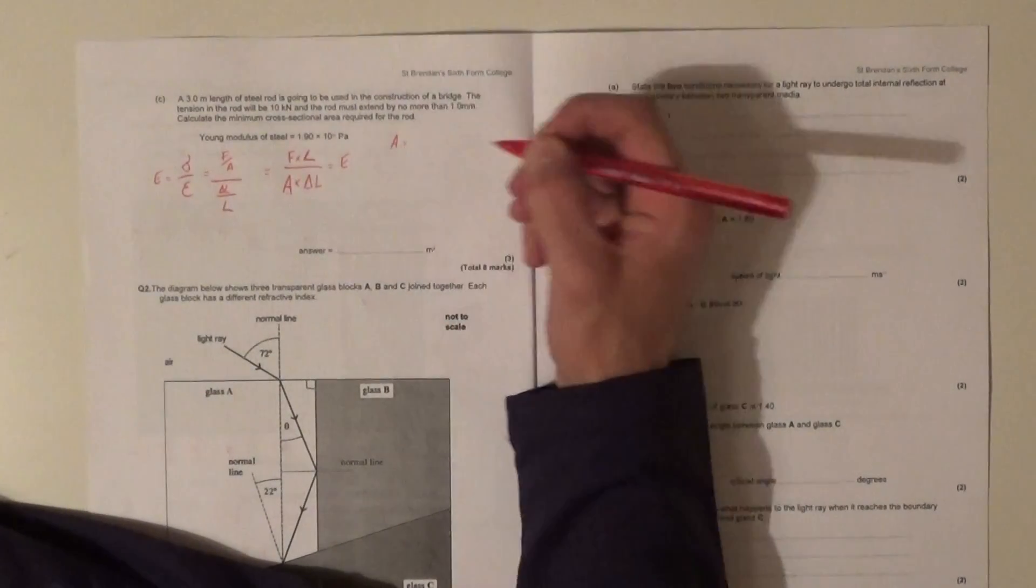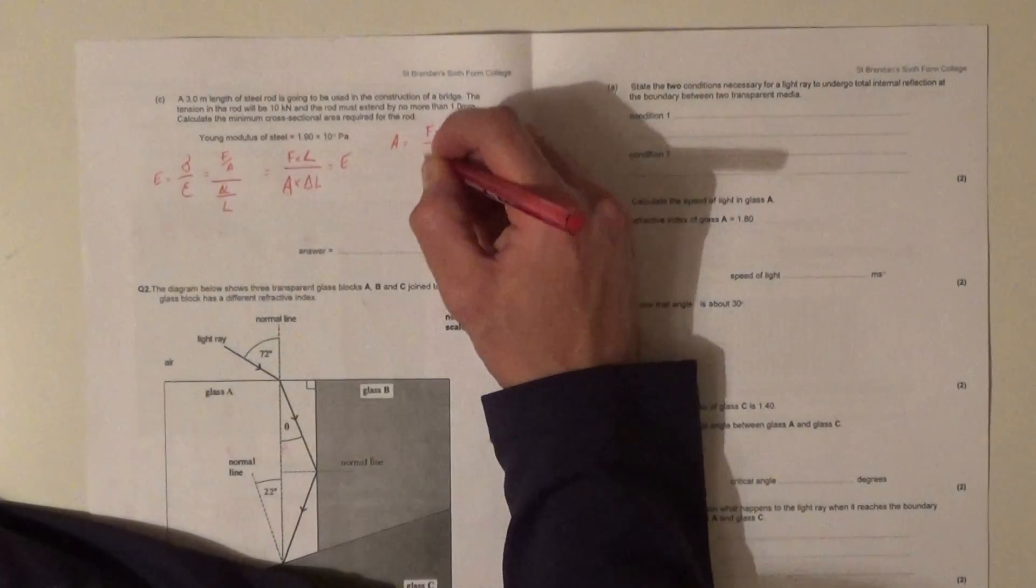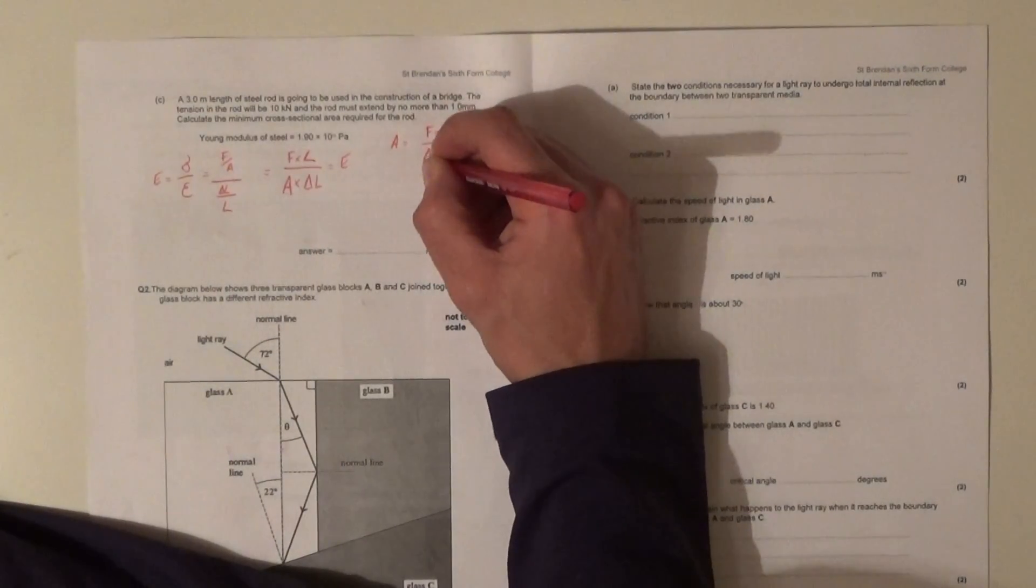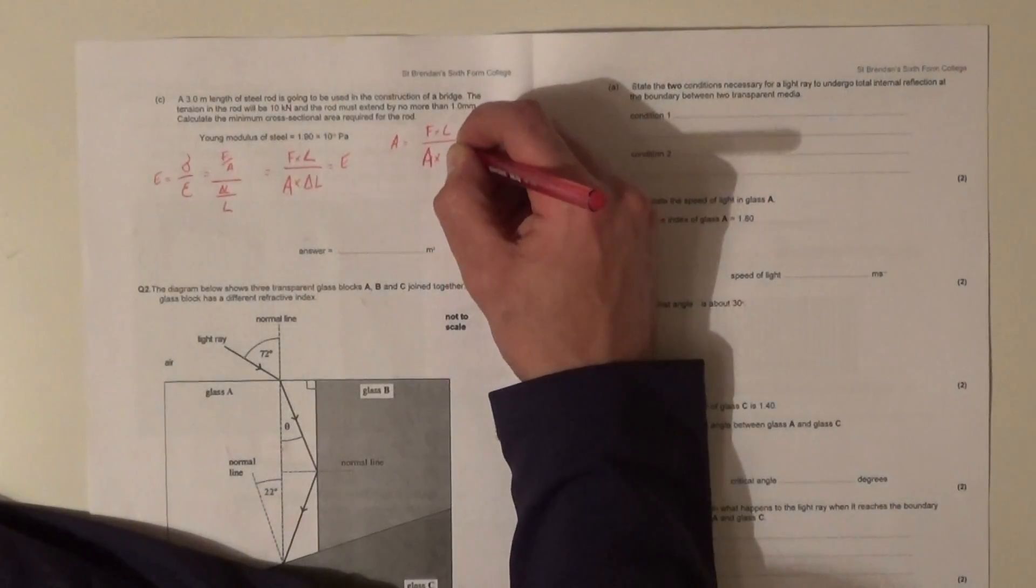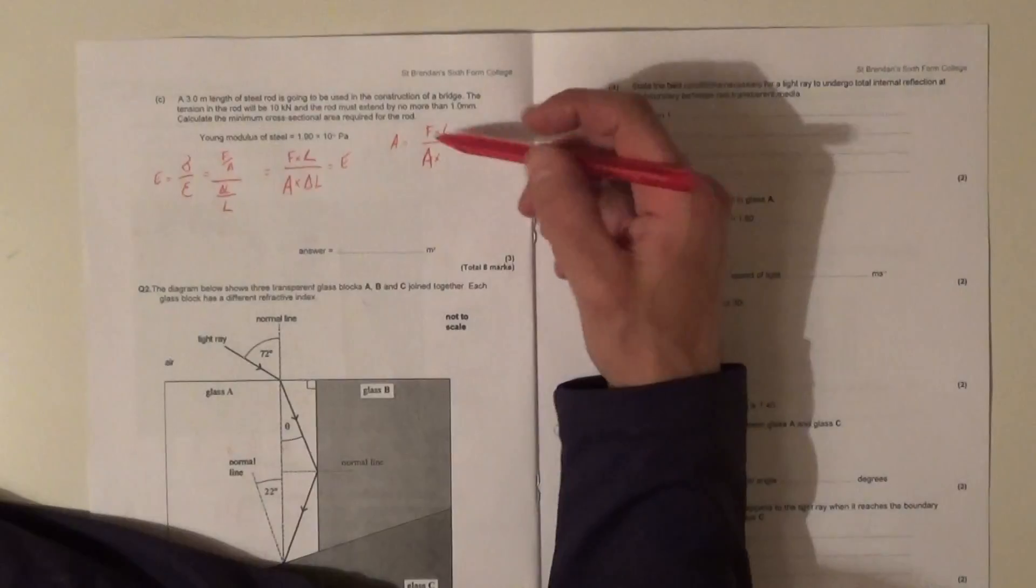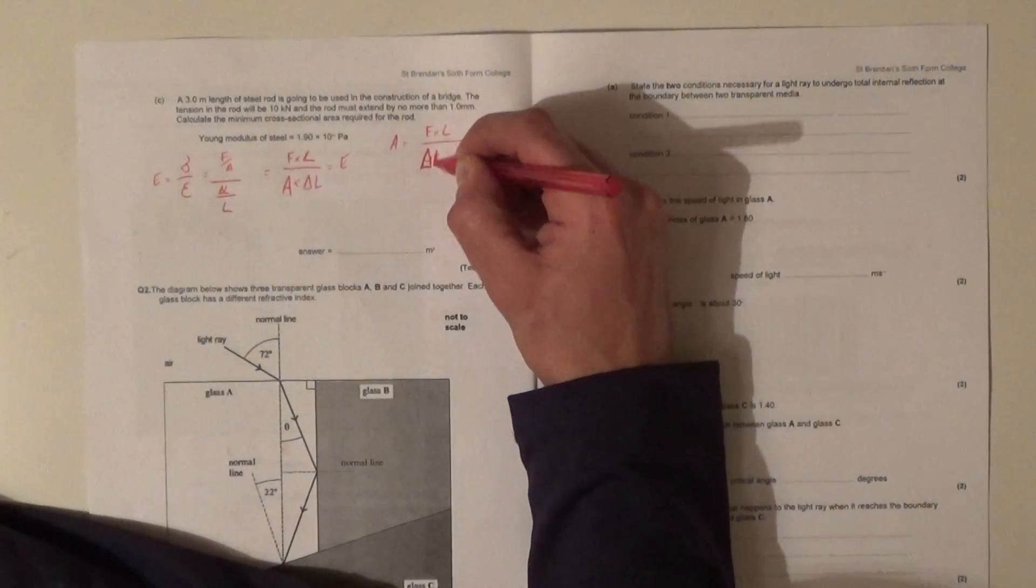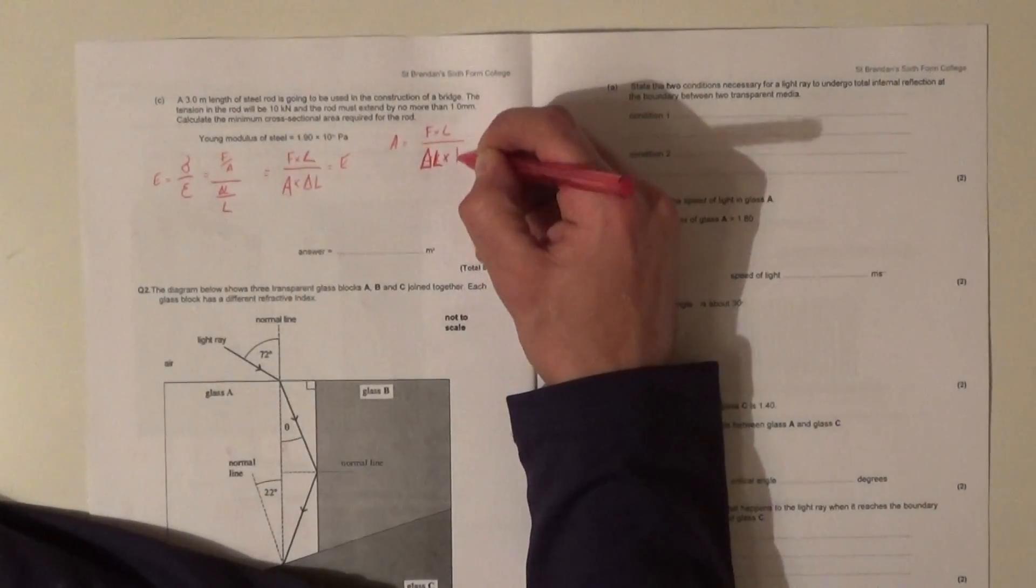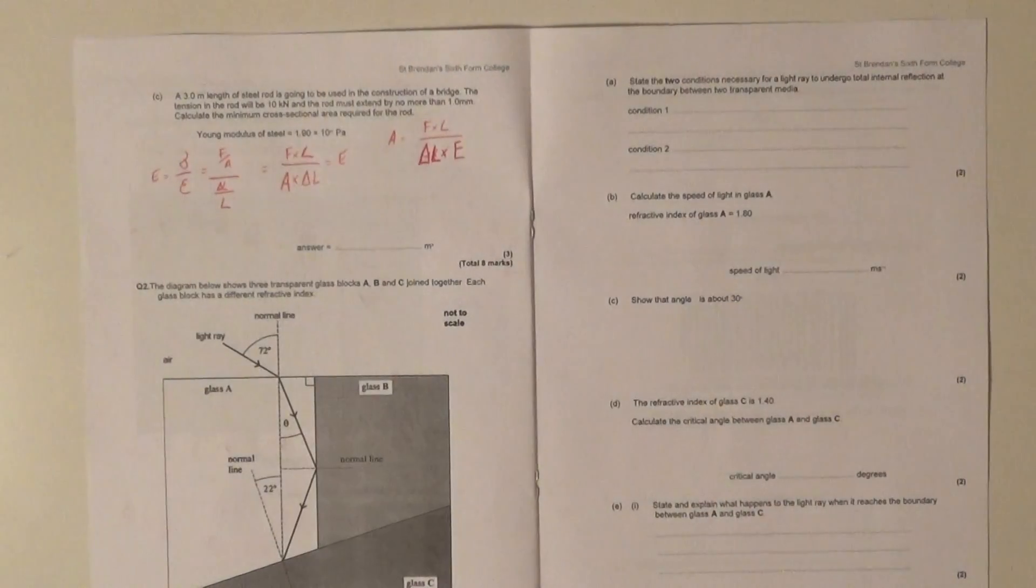And so we can now say the cross-sectional area is going to be equal to force times by length over... I'm messing this up, I'm switching the A for the E, excuse me... delta L times by E, the Young's modulus. It's been a long day. There we go. Anyway, once we got this, now at this stage then.